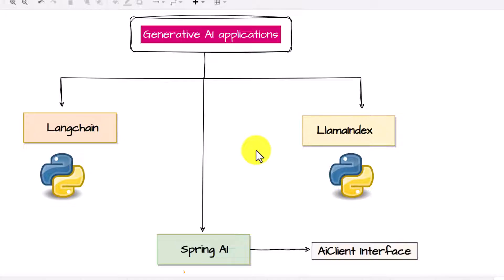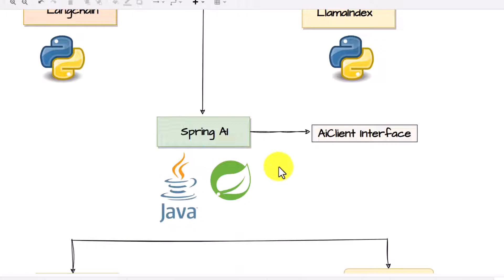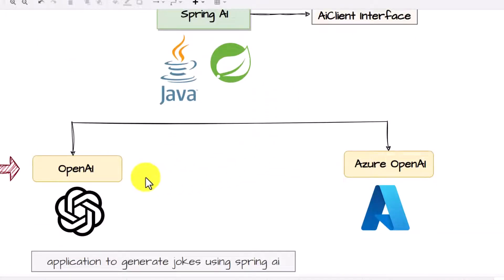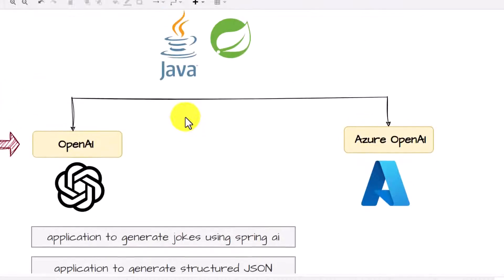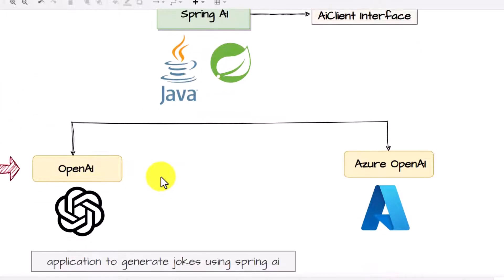Can't we write any generative AI application using Spring Boot? That's where Spring AI comes into the picture. Spring AI provides the flexibility to build generative AI applications using Spring Boot and Java. As of now, this framework can work with OpenAI and it can also work with Azure OpenAI, which is the enterprise version of OpenAI.